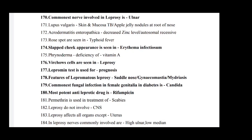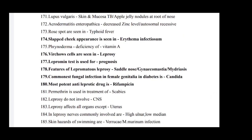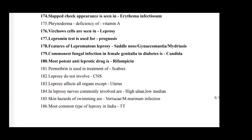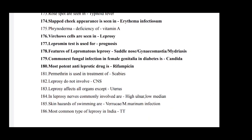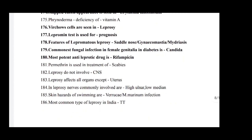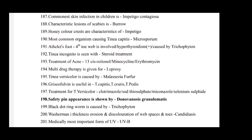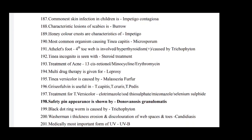Lupus vulgaris is skin and mucosal tuberculosis; apple jelly nodule at root of nose. Acrodermatitis enteropathica: decreased zinc level and autosomal recessive. Rose spots are seen in typhoid fever. Slapped cheek appearance is seen in erythema infectiosum. Phrynoderma is deficiency of vitamin A. Virchow cells are seen in leprosy. Lepromin test is used for prognosis. Features of lepromatous leprosy: saddle nose, gynecomastia, madarosis. Commonest fungal infection in female genitalia in diabetes is candida. Most potent anti-leprosy drug is rifampicin. Permethrin is used for treatment of scabies. Leprosy does not involve CNS. Leprosy affects all organs except uterus.